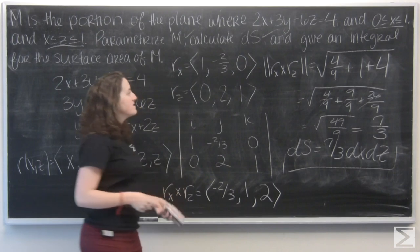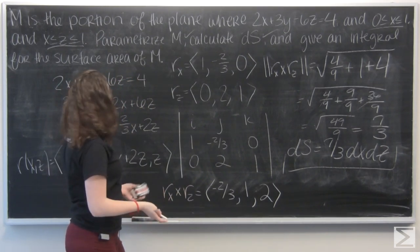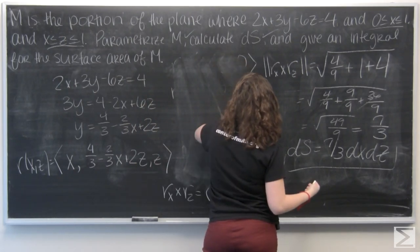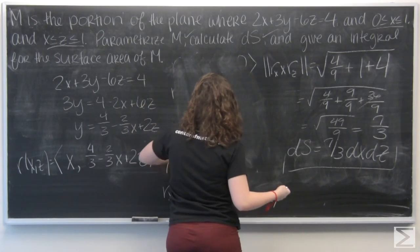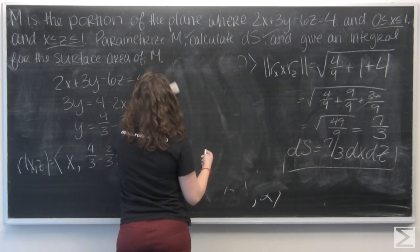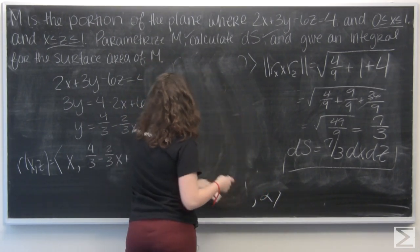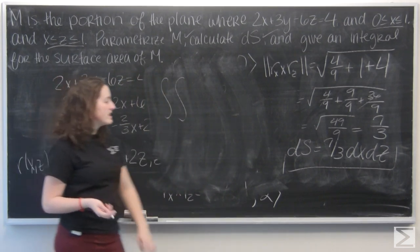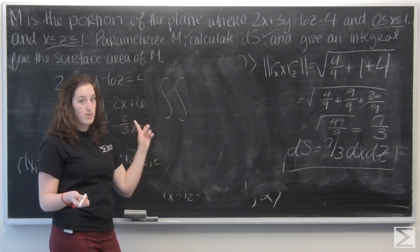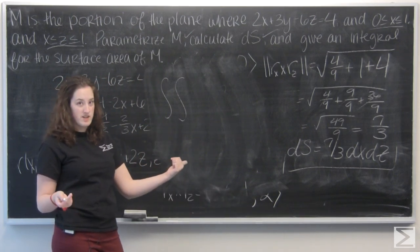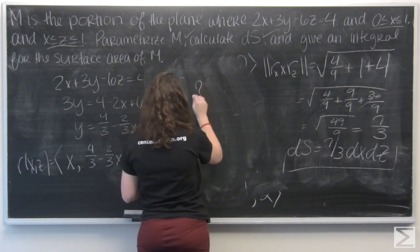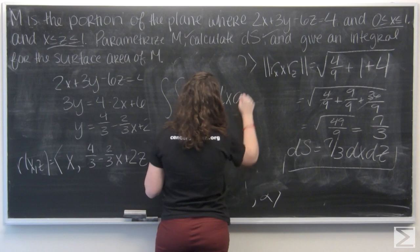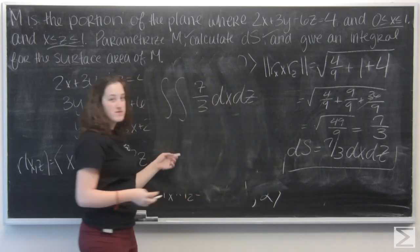And let's give an integral for the surface area of M. I'm going to cut out some of this. Well, I know I can find the surface area of M by integrating ds over M. So let's go ahead and write ds in as our integrand.